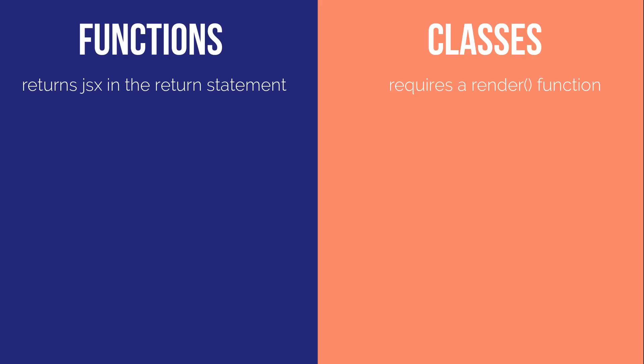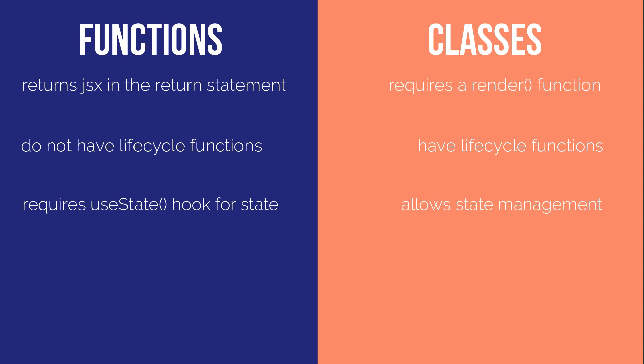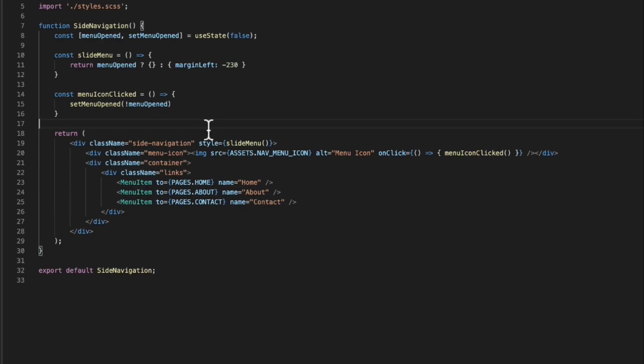Let's go over what we learned: functional components are just functions that return JSX; classes come with a render function which returns the JSX; functional components don't have lifecycle functions while classes do; functional components don't have state management while classes do; and lastly, functional components can use React hooks to manage state and access the lifecycle. If you have any questions, ask in the comments below and I'll get back to you. In the next video we'll be going over props — stay tuned, I'll see you next week.